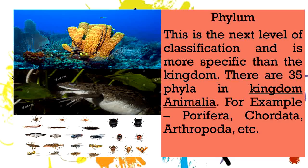Next is phylum. The phylum is the next level of classification and is more specific than the kingdom. There are 35 phyla in kingdom Animalia — for example, Porifera, Chordata, Arthropoda, etc. There are actually tons of phyla, and if we were to discuss all of them in one video it would take a lot of time. Just remember that phylum is next to kingdom and there are 35 phyla in kingdom Animalia.